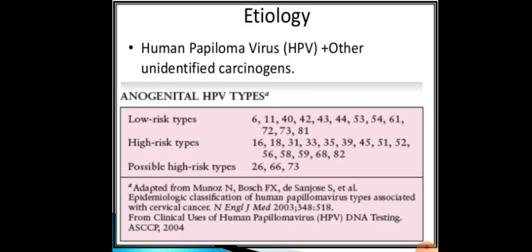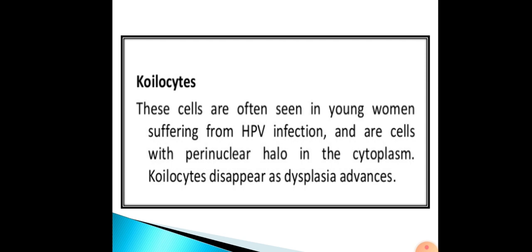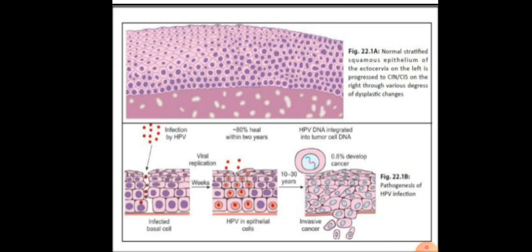A koilocyte is a cell often seen in young women suffering from HPV infection. These are cells with perinuclear halo in the cytoplasm. Koilocytes disappear as dysplasia advances. This picture shows cells infected with HPV.